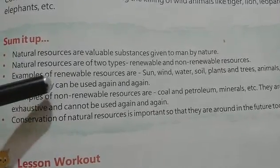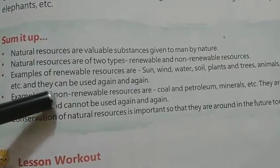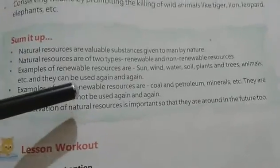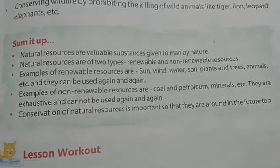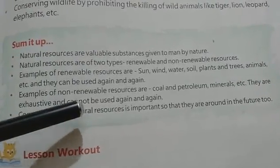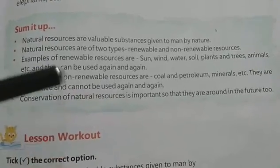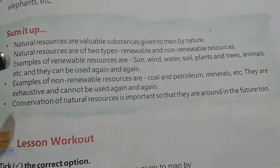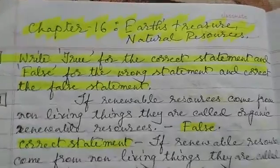Renewable resources can be used again and again. Examples of non-renewable resources are coal and petroleum, minerals, etc. They are exhaustive and cannot be used again and again. Conservation of natural resources is important so that they are around in the future too, otherwise in the future we will have no such natural resources. Now let's come to the question answers — some more objective type questions.